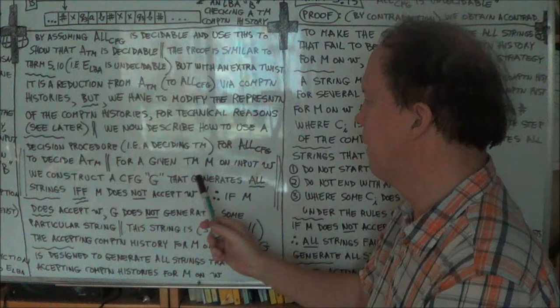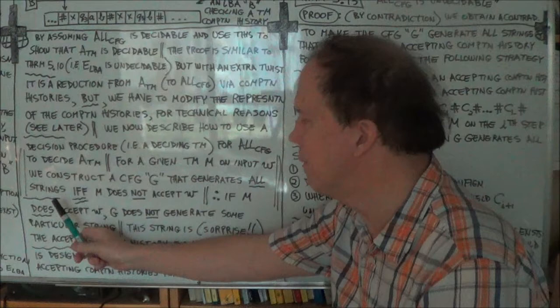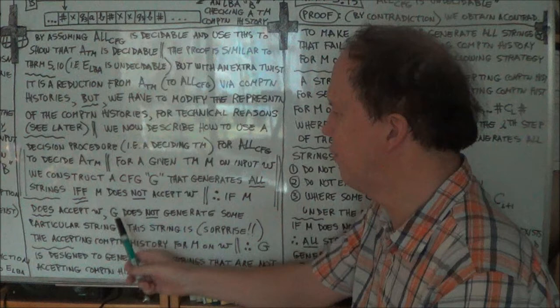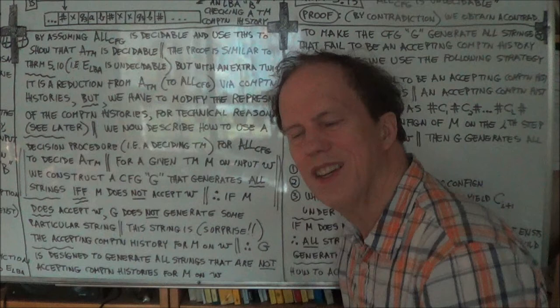This grammar G will generate all strings if and only if M does not accept W. You may ask where this came from — well, as usual, it's ingenious, and you'll probably see where this is going already, but it's a chain of reasoning so maybe not obvious for the moment.